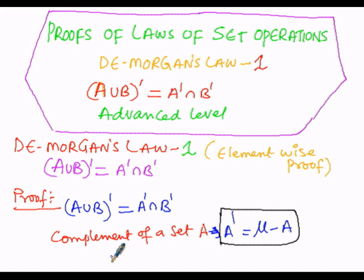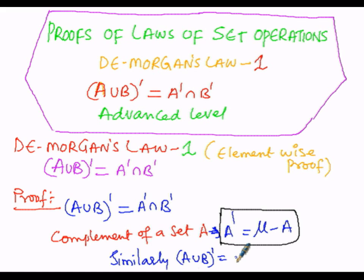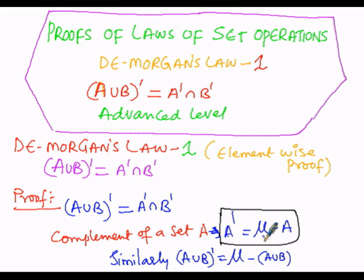In order to prove this condition, we need (A∪B) whole dash. Since the complement involves subtracting the set from the universal set, (A∪B) dash can be written as μ minus (A∪B). Similarly, B dash equals μ minus B. Based upon this formula, we are going to prove that (A∪B)' = A' ∩ B'.